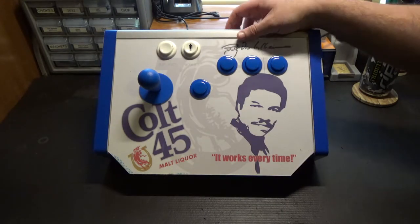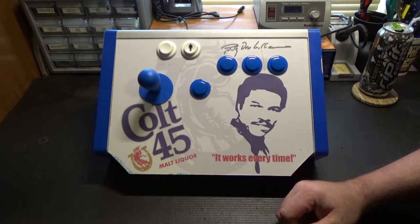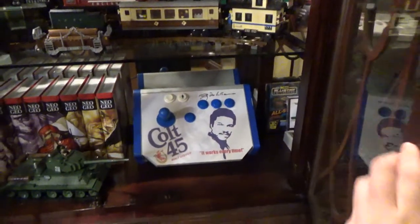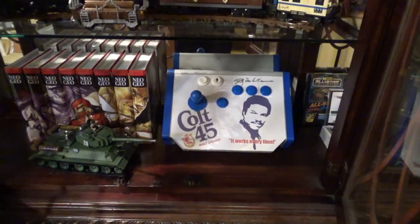So this is the Billy Dee Williams Colt 45 Dude Stick, and I made this as a bit of a showpiece that sits down in my I Love Me cabinet next to my Fatal Fury box set down there.